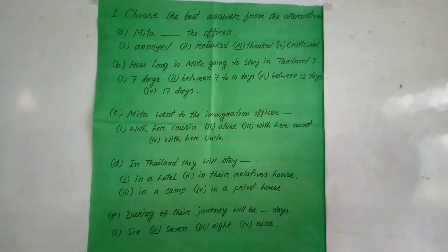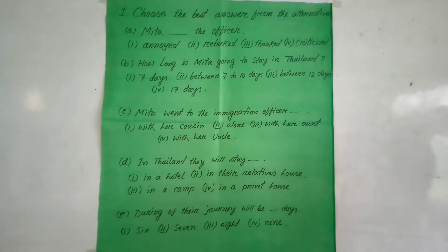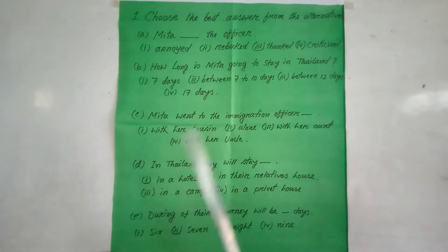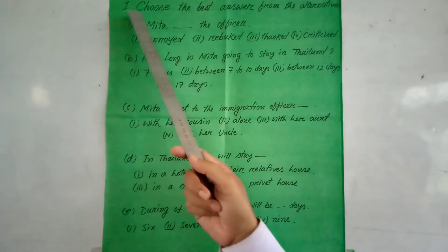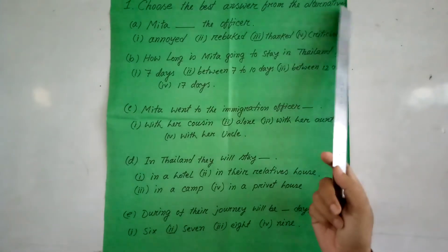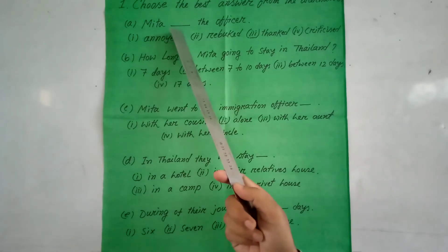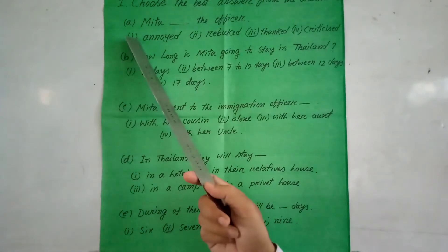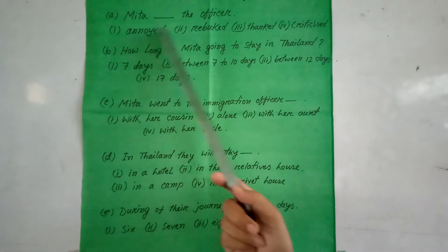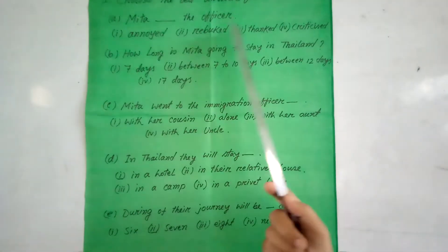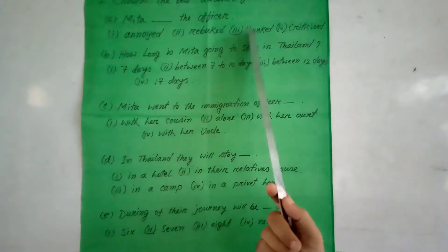You have to read the lesson thoroughly at least three times and solve the hard words — then it will be easy for you to solve the MCQ questions. Now I will solve the MCQ questions. Number one: choose the best answer from the alternatives. A: Mitha — the officer — option one: annoyed, two: rebuked, three: thanked, four: criticized. The correct answer is 'thanked.' B: How long is Mitha going to stay in Thailand? Seven to ten days.